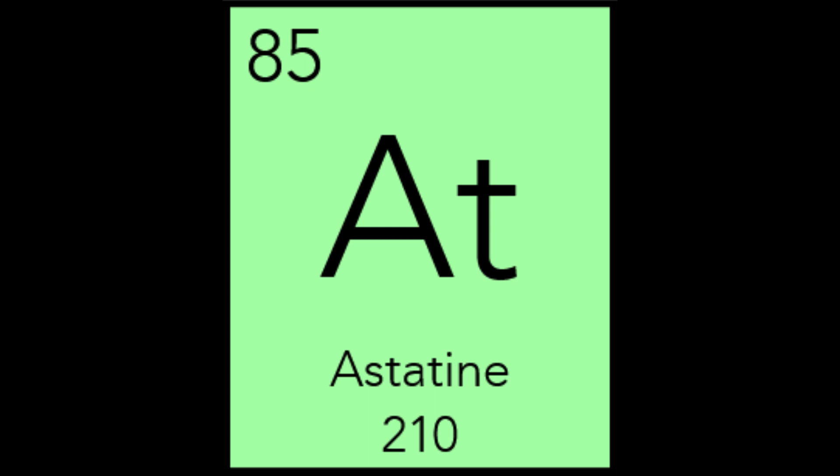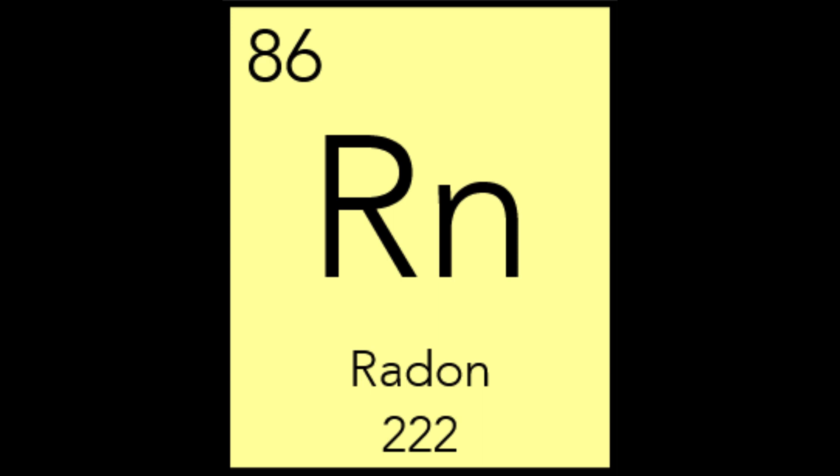Radon was discovered as a radioactive gas emanating from radioactive elements such as thorium, actinium, and radium. Three of its isotopes were named thorium emanation, actinium emanation, and radium emanation, based on which element they came from. Radium emanation was the most stable of the three, and the element was therefore named radon. Radon, Rn, can seep through soil into buildings and cause indoor air to be contaminated, especially in rooms with bad ventilation. While insignificant in small amounts, higher concentrations of radon can cause lung cancer — in fact, radon is the second largest cause of lung cancer after smoking. So maybe open a window.